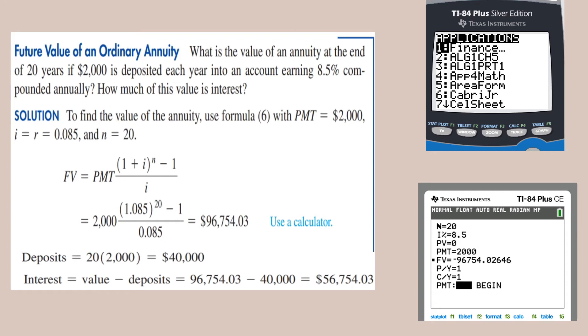So the value for the future value is $96,754. In this, we have to remove the deposited amount because you are paying $2,000 for 20 years, which is $40,000. If that $40,000 is removed, the remaining $56,754 is the interest.